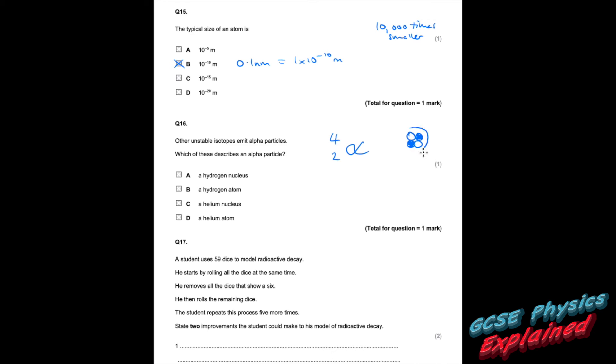Question sixteen: which of these describes an alpha particle? An alpha particle has a mass of 4 and a charge of plus 2 — it's basically two protons and two neutrons (inside the nucleus). It has no electrons around the outside, so it is essentially the helium nucleus — helium-4. An alpha is just the helium nucleus without any electrons.